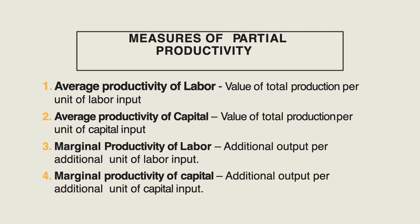Some measures of partial productivity include average productivity of labor — the value of total production per unit of labor input — and average productivity of capital — the value of total production per unit of capital input. There is also marginal productivity of labor, which is the additional output per additional unit of labor, and marginal productivity of capital, which is the additional output per additional unit of capital.